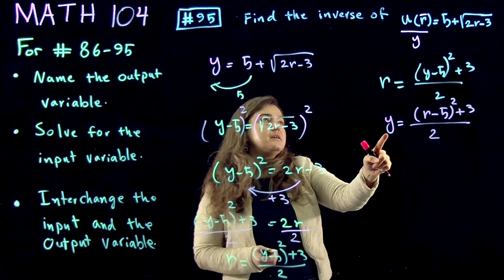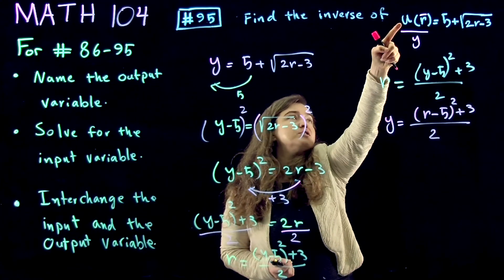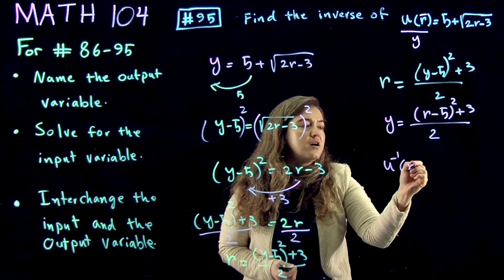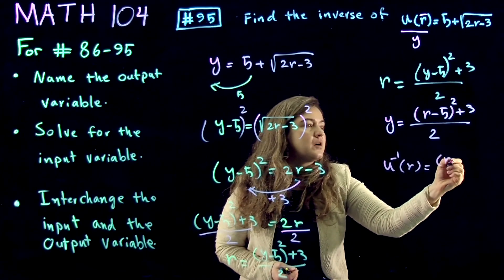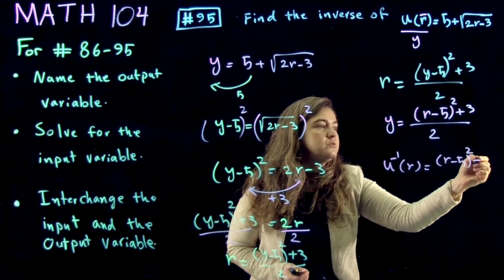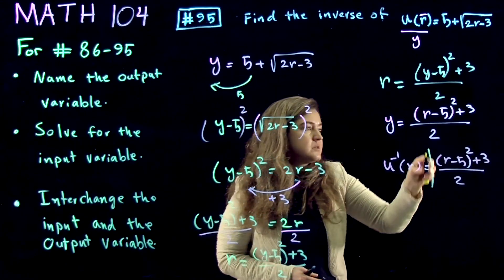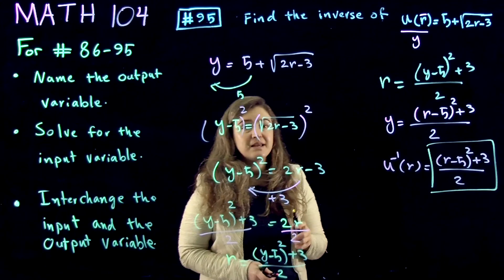Now, what was the output function? Function that we had was u of r. So it becomes u inverse of r equal to r minus 5 to the power of 2 plus 3 divided by 2. This is what you enter in your gateway exam and we're done.